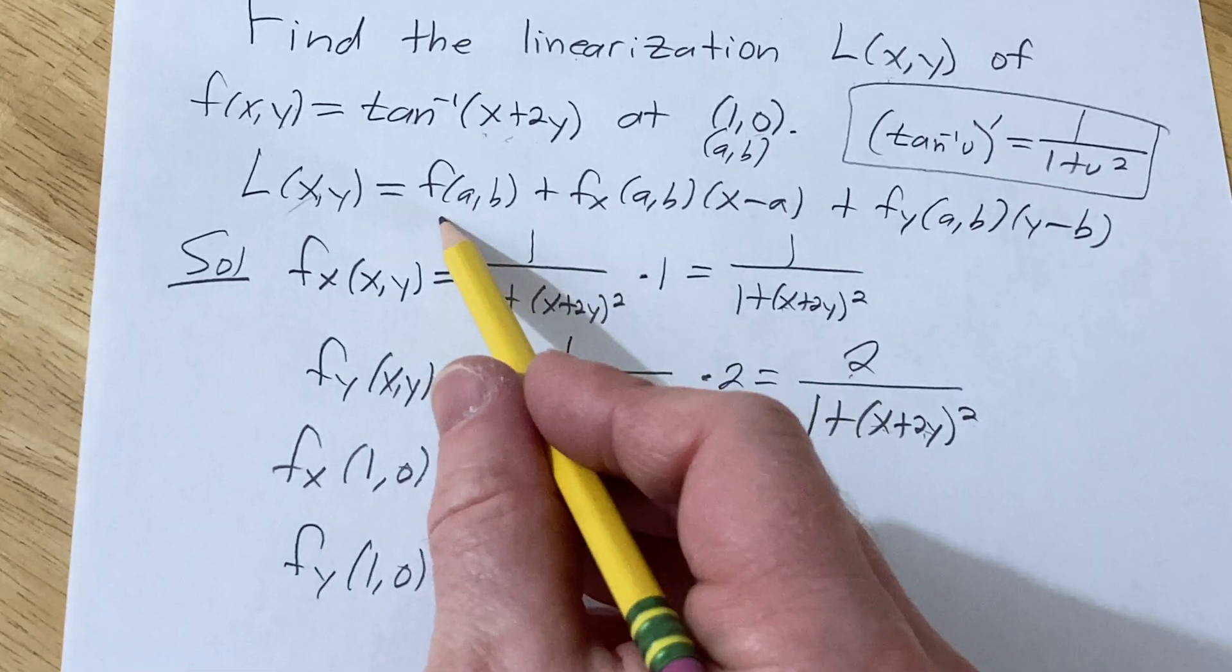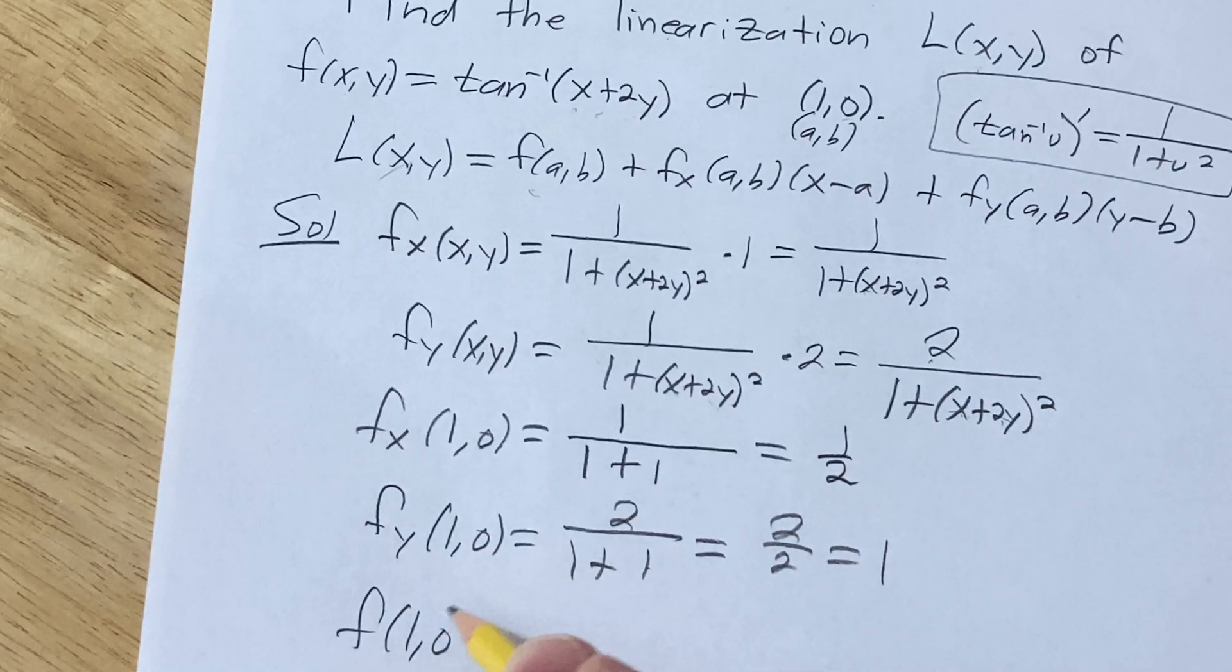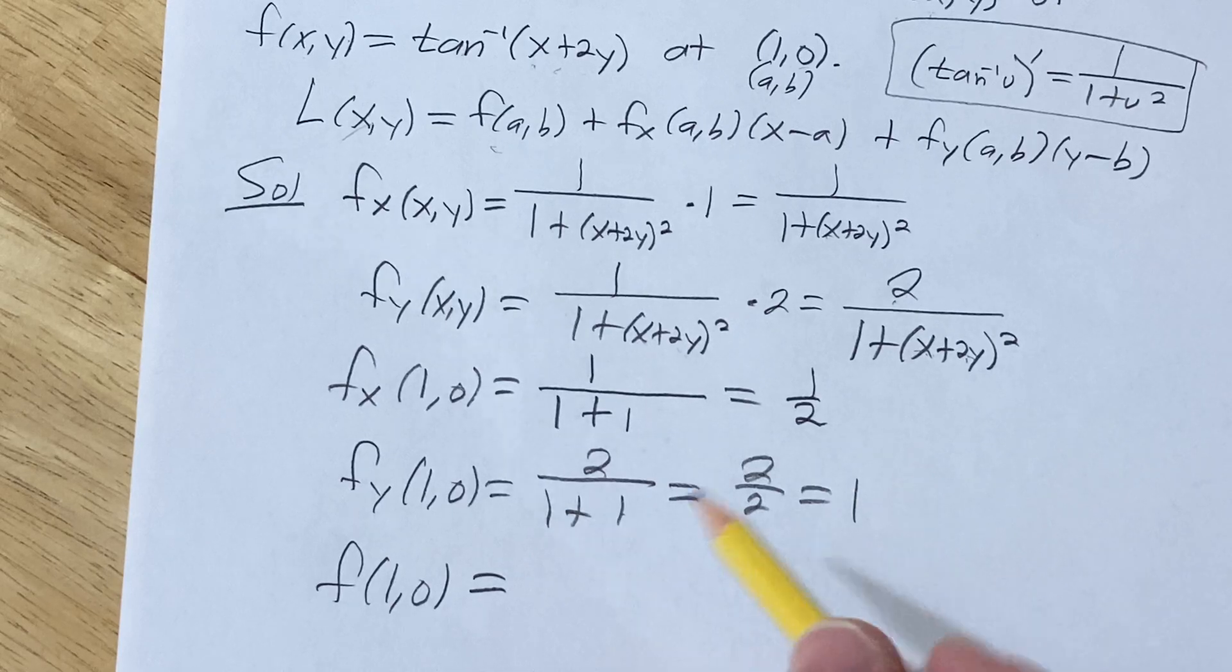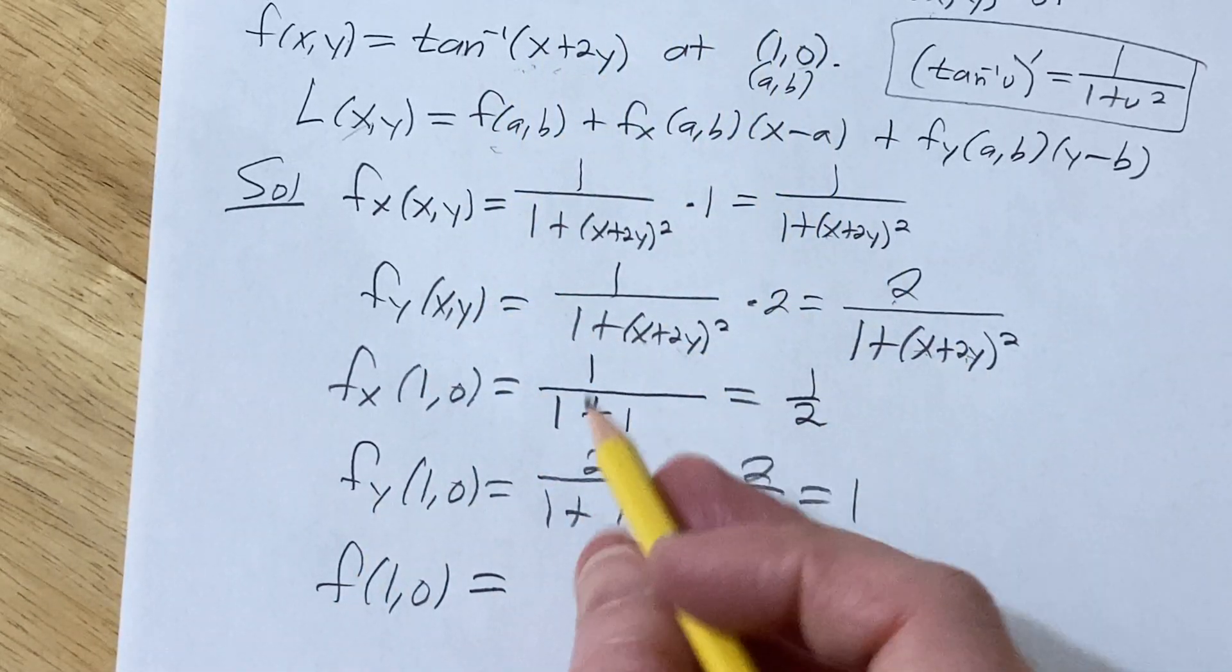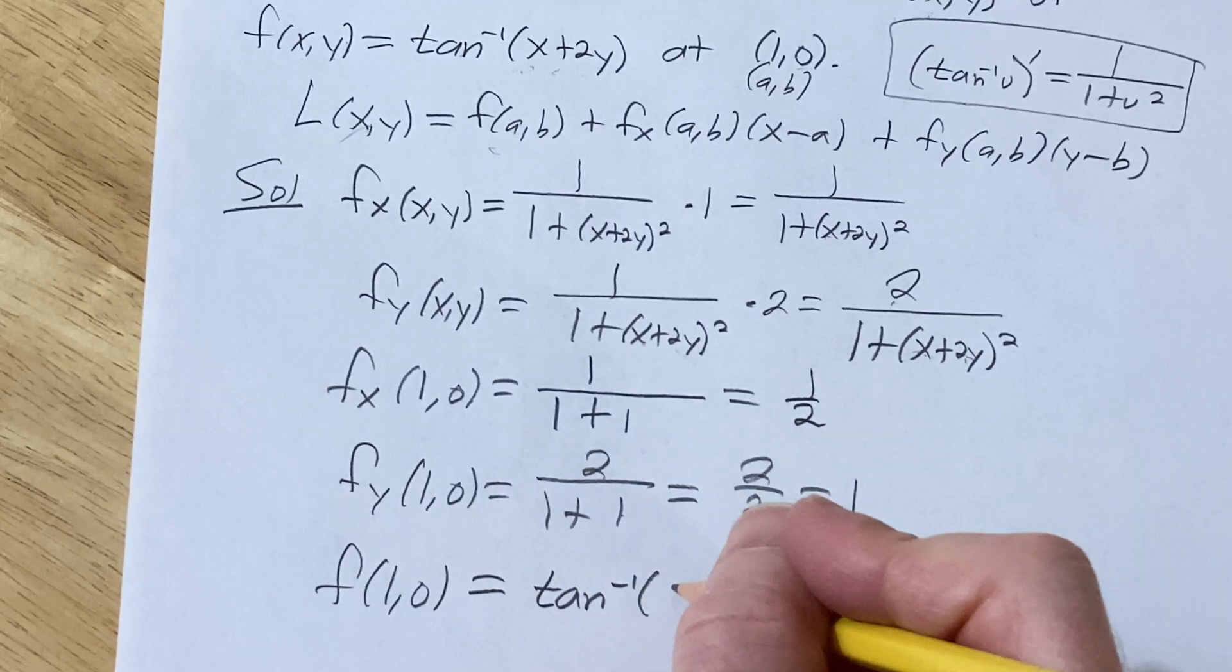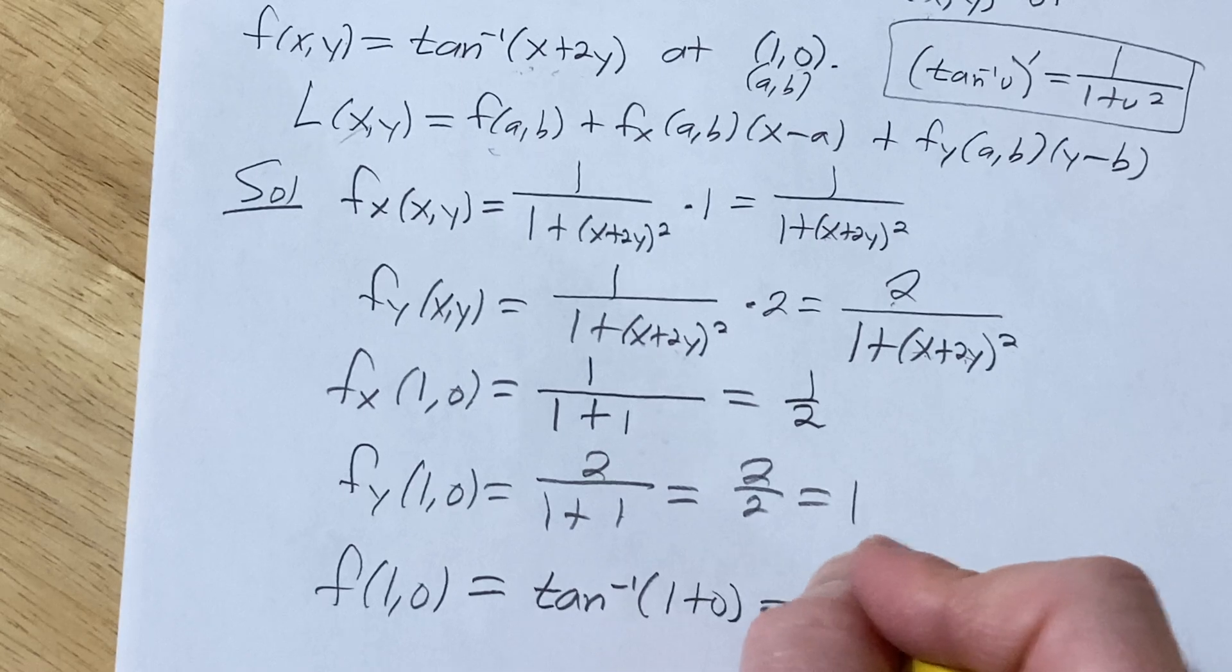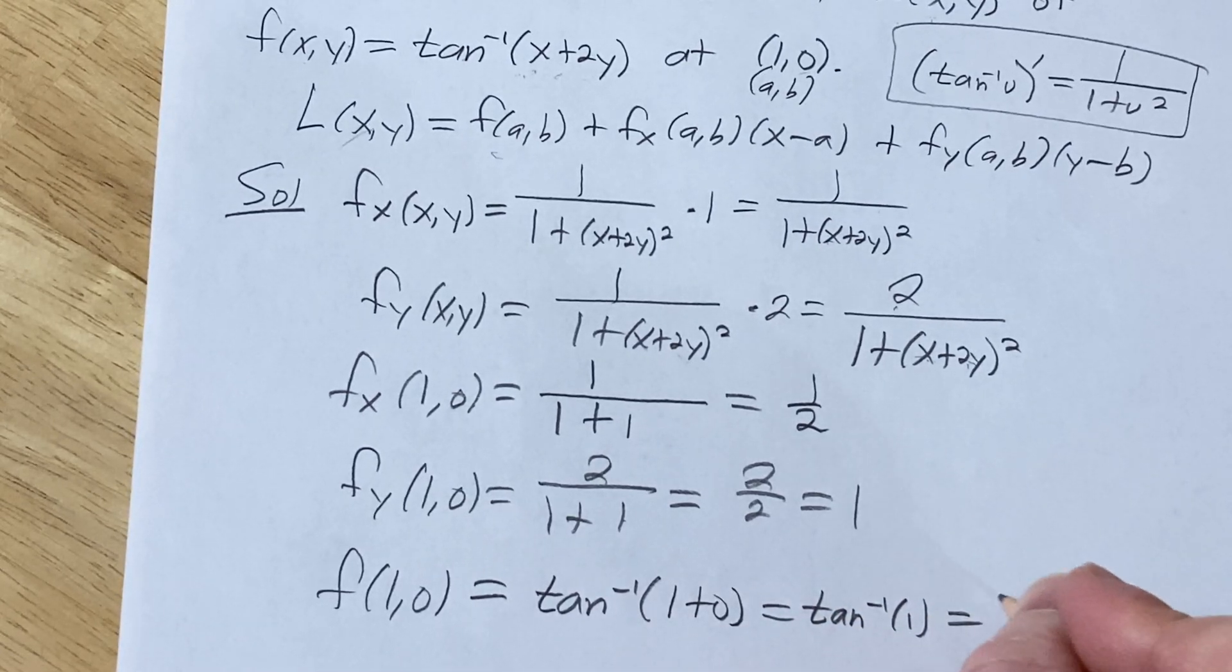We also need the function value at that point, so let's find that. So this one's also pretty easy. So our function's up here. So basically it'll be tan inverse, or arctan, of 1 plus 0. This is tan inverse of 1, which is just π over 4.